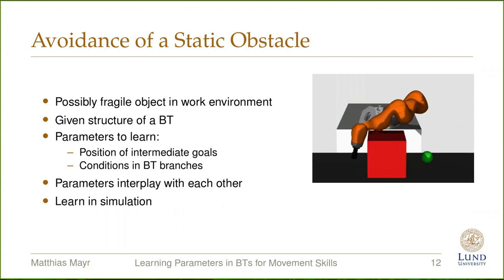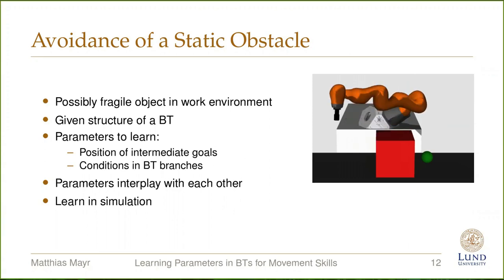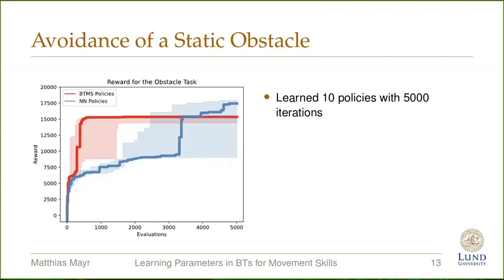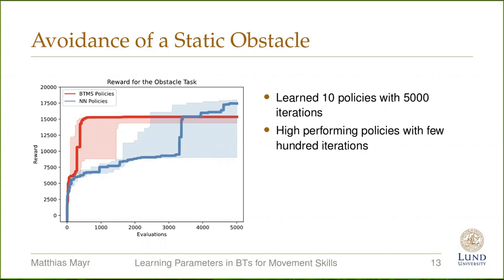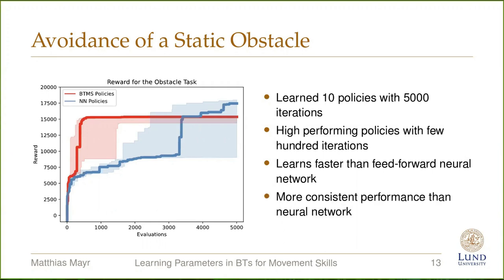We learned this task entirely in simulation, with 10 policies of 5,000 iterations each. We compare our approach to a feed-forward neural network with one hidden layer of 10 neurons. The development of the reward shows that BTMS policies learned high-performing behaviors in only a few hundred iterations, significantly faster than neural nets. Neural nets could eventually outperform the given structure of the movement skills; however, even though they control the end-effector goal position, the motions can be much harder to predict. Furthermore, the performance is less consistent.